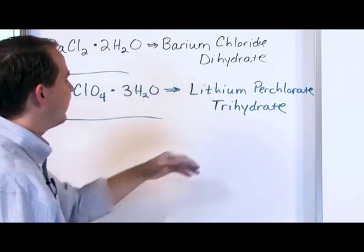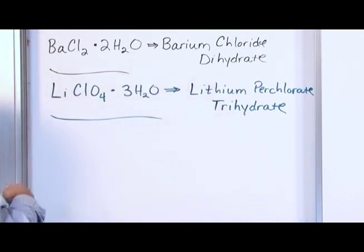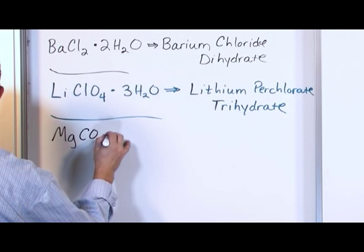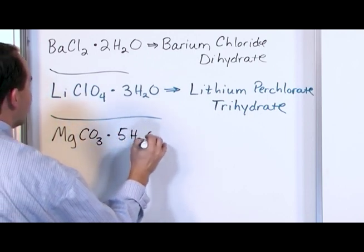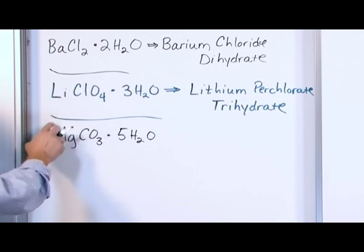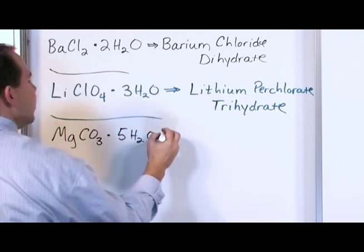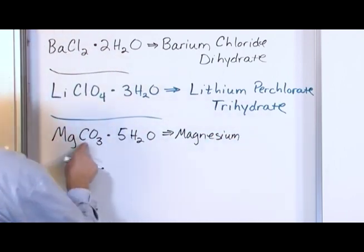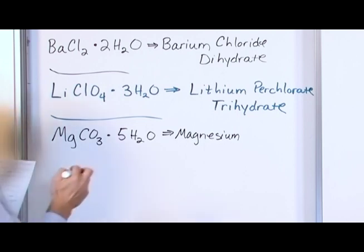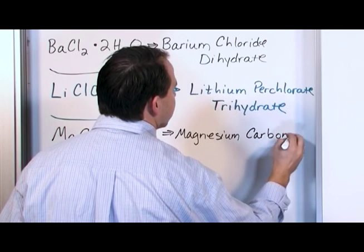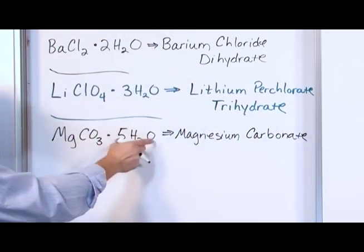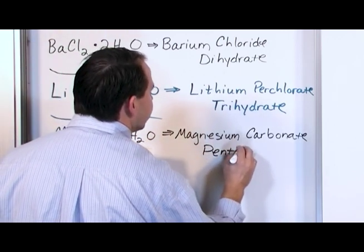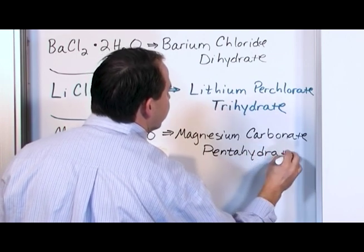We have some magnesium here, some CO3 dotted with 5H2O, so we have five water molecules in the lattice for every one of these formula units. What would this be named? This is simply magnesium carbonate. CO3 is carbonate. What about this? We have five waters, the prefix for five is penta, so it's pentahydrate. Magnesium carbonate pentahydrate.